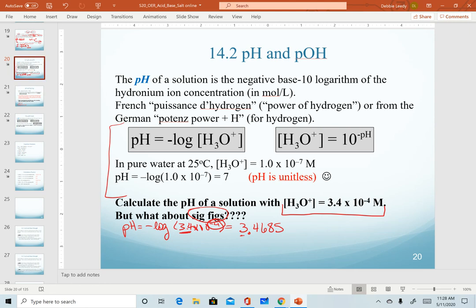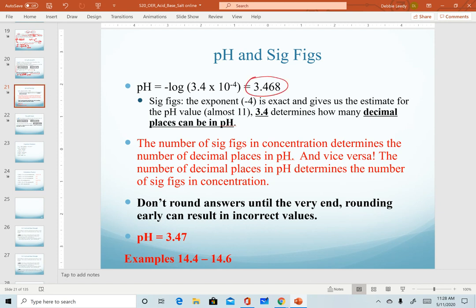Now our new rule for sig figs is, here's our pH calculated from the previous one. Since the exponent gave us the value close to 4 in front of the decimal, the sig figs in the value that we calculated are going to determine the number of decimal places. And so the rule that we use is the number of sig figs in concentration, or whatever quantity we're using for sig figs, the sig figs in concentration will determine the number of decimal places in pH and vice versa. So if I give you pH that goes to two decimal places, that means your concentration of whatever we're solving for would go to two sig figs. So this rule works in both directions.